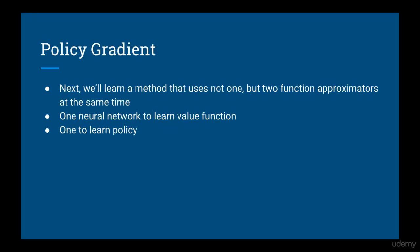After that, we'll look at a method that uses not one but two function approximators at the same time. In particular, we'll be using one neural network to learn the value function, and one neural network to learn the policy. This is called the policy gradient method.